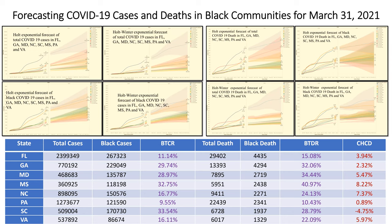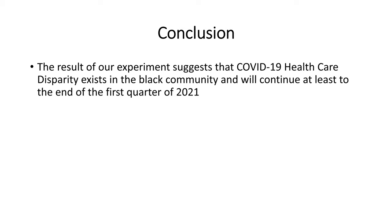With the exception of South Carolina as an outlier, our experiment shows that COVID-19 healthcare disparity in the Black community will continue. Our forecasting model covers December of last year through March 31, 2021 — we do not have a longer-range forecast at this time. In conclusion, the results suggest that COVID-19 healthcare disparity has persisted in the Black community and will continue at least through the end of the first quarter of 2021. Thank you very much.